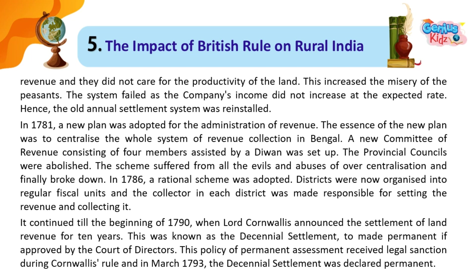The provincial councils were abolished. The scheme suffered from all the evils and abuses of over-centralization and finally broke down. In 1786, a rational scheme was adopted. Districts were now organized into regular fiscal units, and the collector in each district was made responsible for settling the revenue and collecting it.